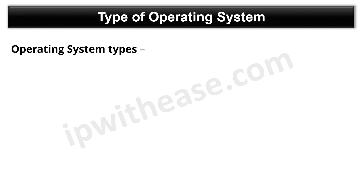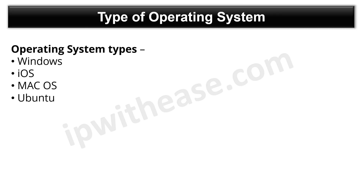Now that we have gone through the key tasks performed by an operating system, let's talk about operating system types. Operating system types include Windows, iOS, Mac OS, Ubuntu, Novel Netware, Unix, and Linux.